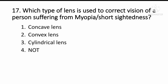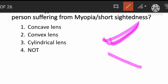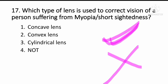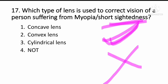Which type of lens is used to correct the vision of a person suffering from myopia or short-sightedness? Myopia means the person can see nearby objects clearly but cannot see far. The answer is concave lens, option 1.